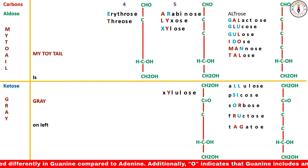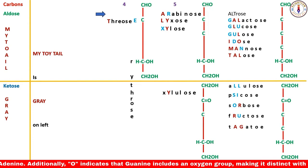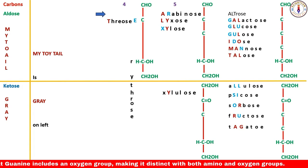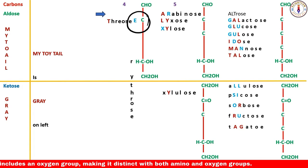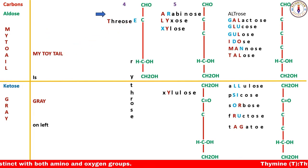Let's start from erythrose. Write the name vertically next to the skeleton starting from carbon number two, placing one letter in front of each carbon. Letters after the second-last carbon don't matter. In erythrose, only E is important — the letter E is not in 'my toy tail,' so the hydroxyl group will be on the right side. For threose, write the name vertically — only T is important. T is included in 'my toy tail,' so the OH will be on the left side.